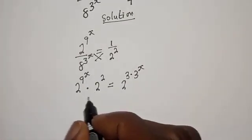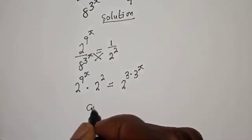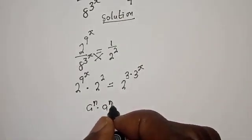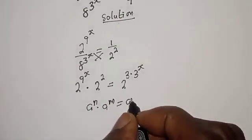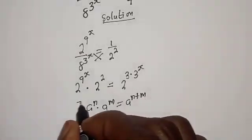Take note that if you have a raised to power n, multiplied by a raised to power m, this is equal to a raised to power n plus m.